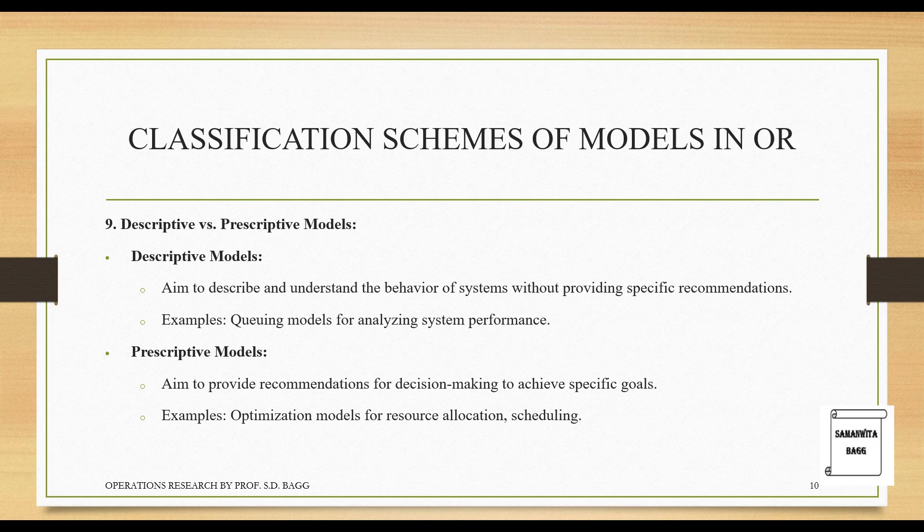Descriptive versus prescriptive models: descriptive models aim to describe and understand the behavior of systems without providing specific recommendations. An example is queuing models for analyzing system performance. Prescriptive models aim to provide recommendations for decision-making to achieve specific goals, such as optimization models for resource allocation and scheduling. The key difference is that prescriptive models are already developed enough to support decisions, while descriptive models are still trying to understand the system and collect data.